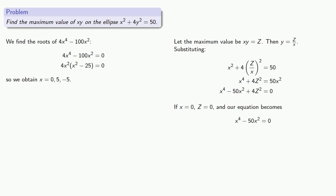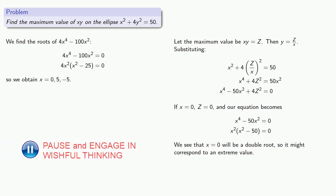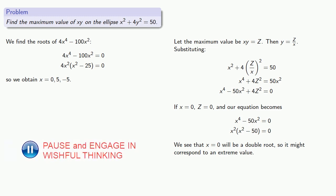If x equals 0, z is equal to 0, and our equation becomes. We see that x equals 0 will be a double root, so it might correspond to an extreme value. But note that if x equals 0, xy is 0, so we won't get a maximum or a minimum.